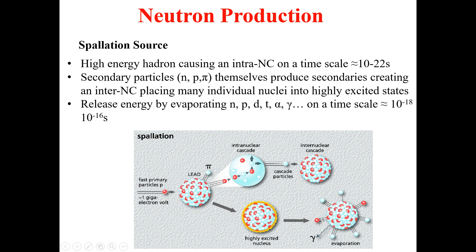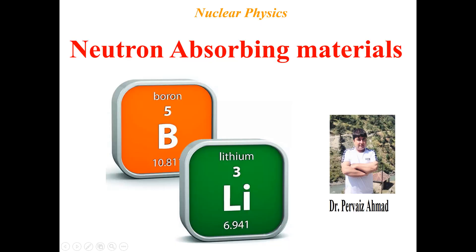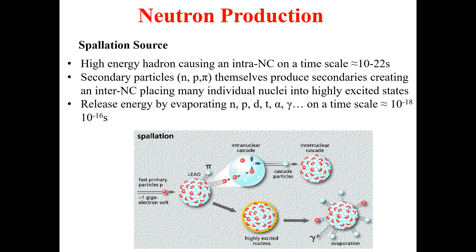After that, the highly excited nuclei release energy by evaporating neutrons, protons, tritium, alpha particles, and gamma rays on a timescale of approximately 10⁻¹⁸ to 10⁻¹⁶ seconds. This is how we get neutrons via a spallation source. This concludes all we have on the production and generation of neutrons during different reactions.